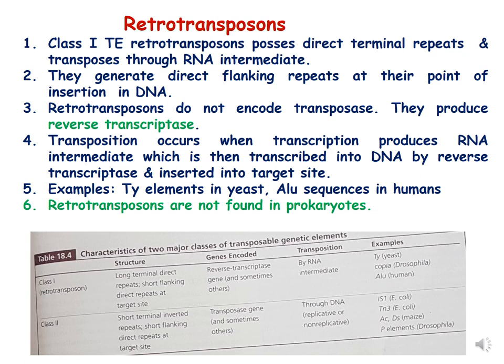So retrotransposons essentially work through reverse transcription and are then inserted into DNA. Examples are TY elements in yeast and ALU sequences in humans. Importantly, retrotransposons are found only in eukaryotes and are not found in prokaryotes.